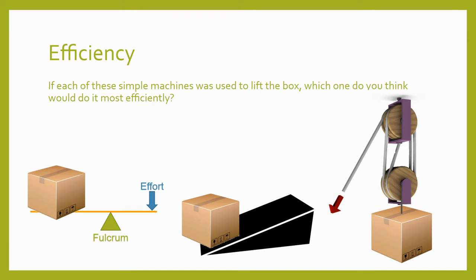If each of these simple machines were used to lift the same box, which one would do it most efficiently? The block and tackle has the most moving parts, with significant contact between the rope and pulleys and between the pulleys and axles. The inclined plane imposes a lot of friction on the box as it slides up the surface. The lever has very few moving parts and a small surface area between moving parts, resulting in very little friction — so in this situation the lever is likely to be the most efficient option.